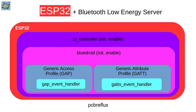The first thing we have to do is initialize and enable the Bluetooth controller, then initialize and enable the Bluedroid library. Then we use the Generic Access Profile from the Bluetooth stack, and also the Generic Attribute Profile or GATT. We have to write event handlers for both GAP and GATT, so we can receive and create Bluetooth events for our service.